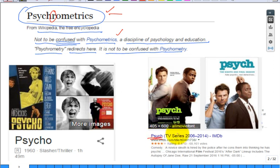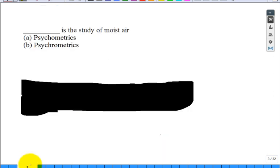It's easy to get confused - one letter. Psychrometrics is the study of moist air. What is psychometrics? It's a discipline, a study of psychology and education. So clicker question: blank is the study of moist air.